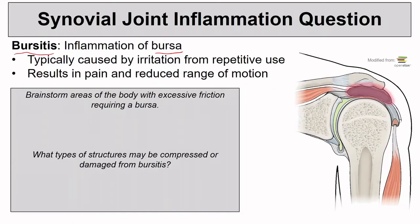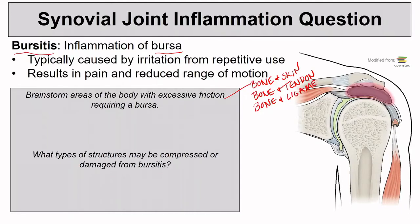Here are some questions for you. First, brainstorm some areas of the body where there's excess friction where we might find a bursa. Remember that bursae can be found between bone and skin, between bone and tendon, or between bone and ligament. There are about 150 bursae in your body, so I don't expect you to think of all of them. But once you think of a few, consider what structures might be compressed or damaged if that bursa were inflamed. Pause to take a moment to think about some of these and write down your answers.